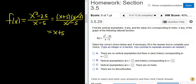So to find the hole, you ask yourself, what makes the piece that cancels 0? So 5, because 5 minus 5 is 0. So we have a hole at x equals 5.